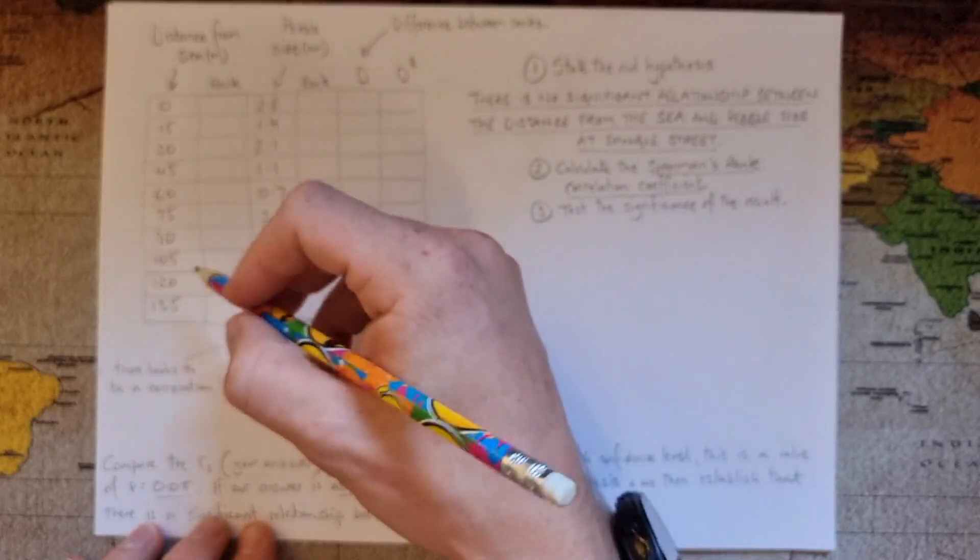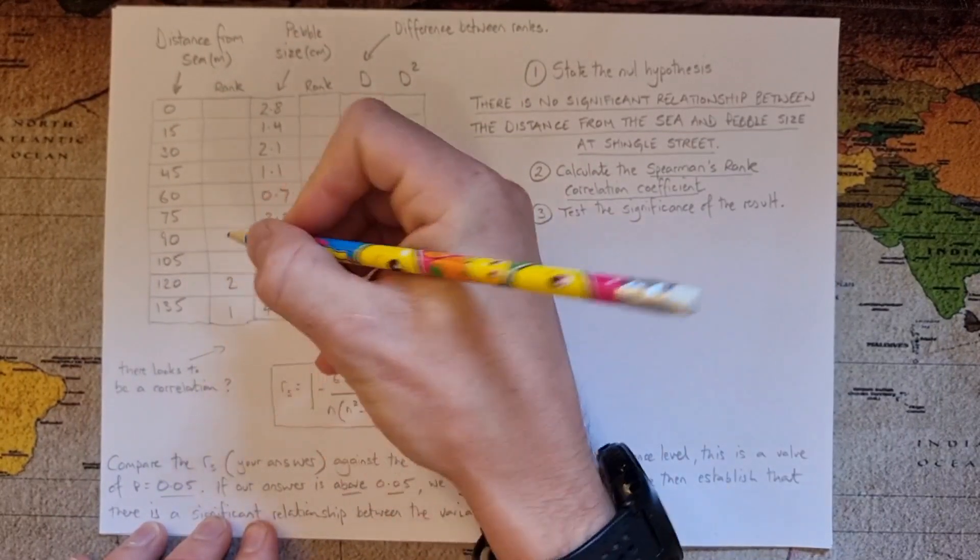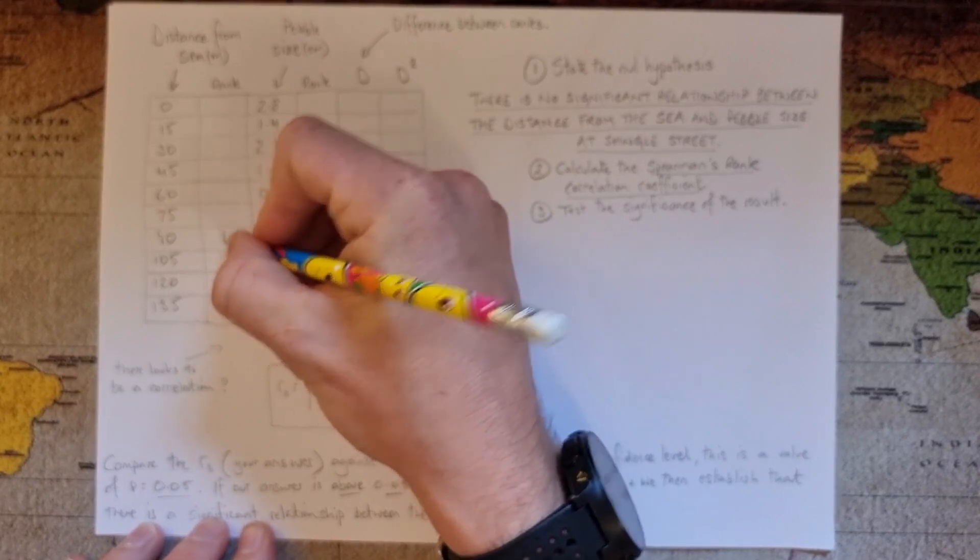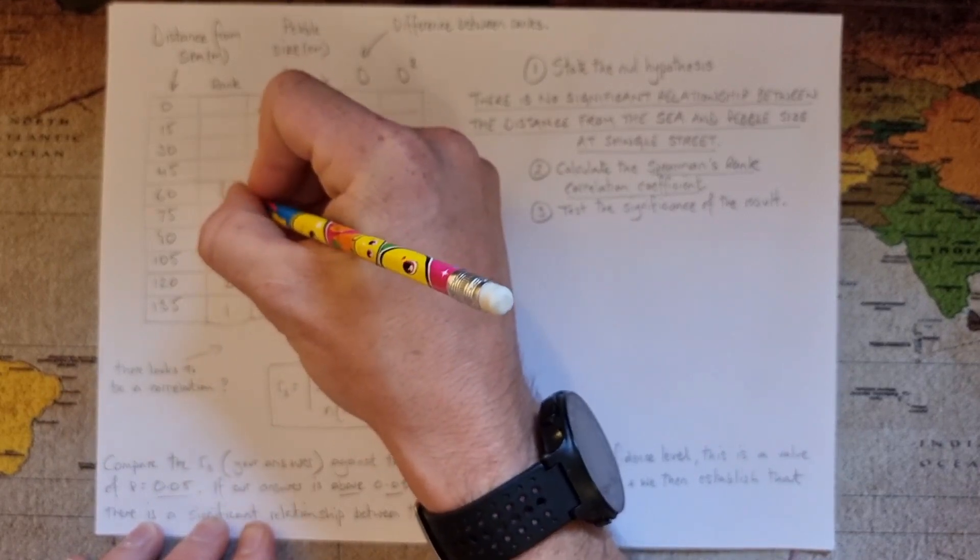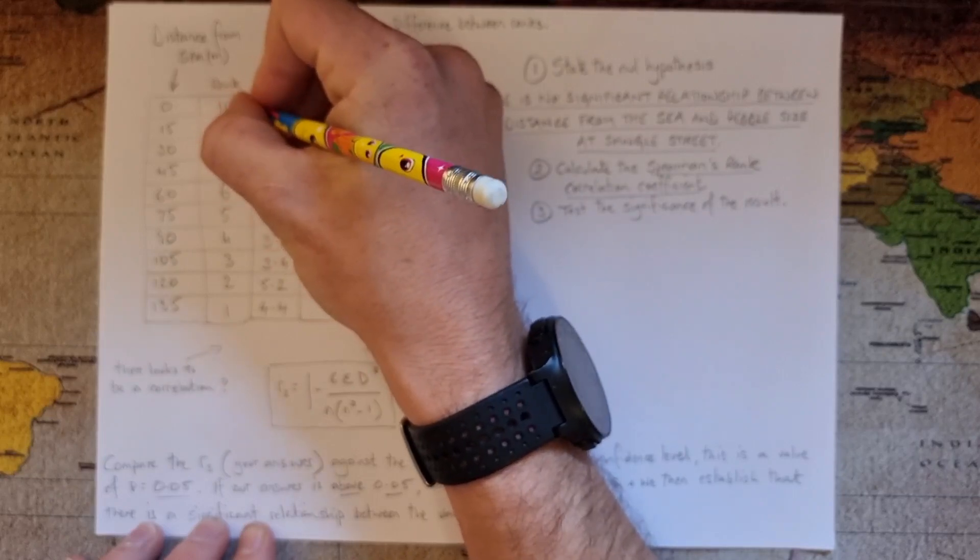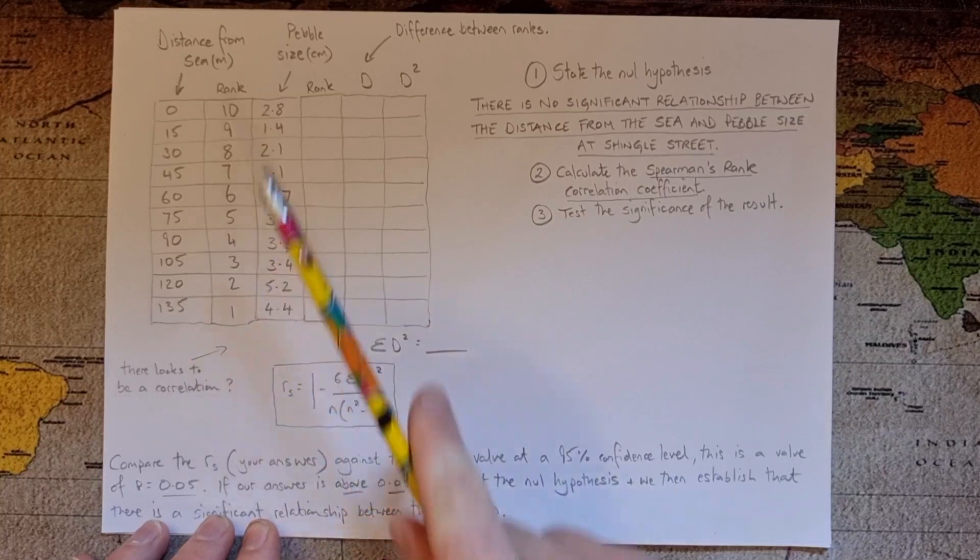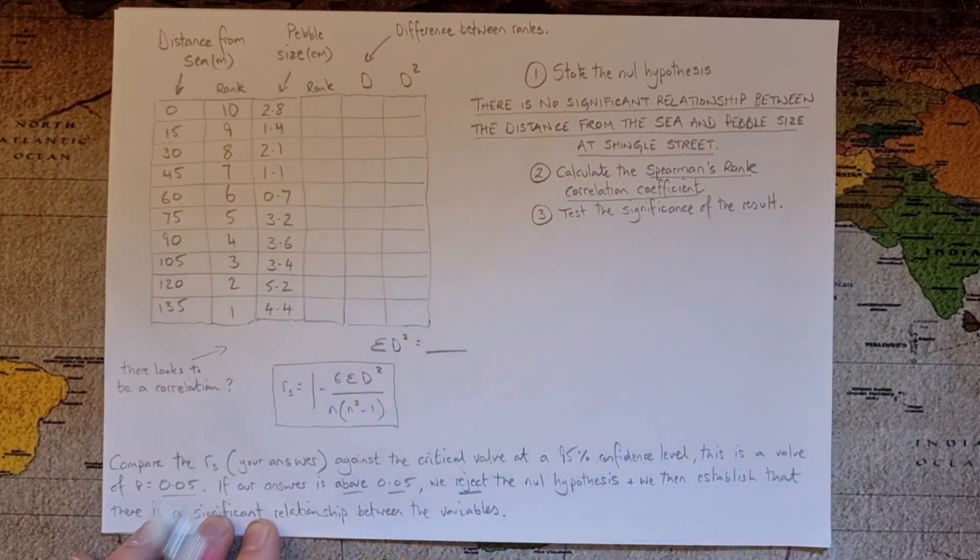So I can just go, because these are clear intervals, I can just do 1, 2, 3, 4, 5, 6, 7, 8, 9, 10. Okay, very straightforward, I've ranked those numbers.